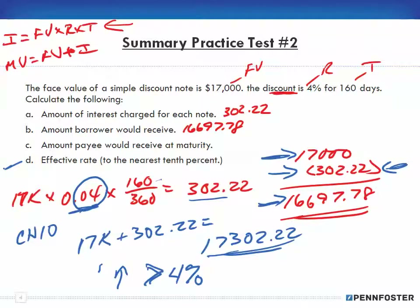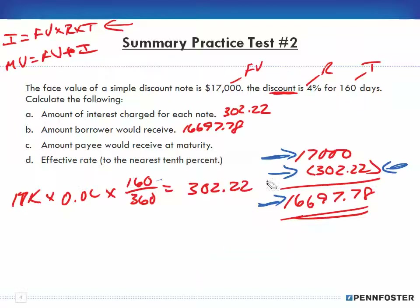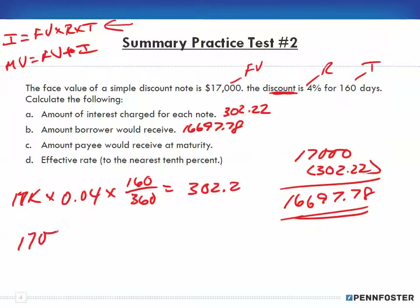So that's the difference between the simple interest in chapter 10 and what we're doing here in chapter 11 using discounting. The amount the payee would receive at maturity ends up being the $17,000.